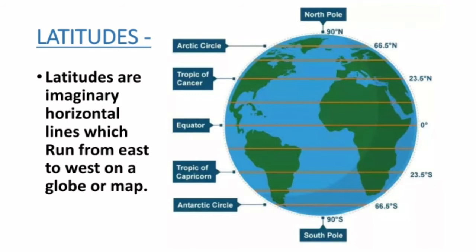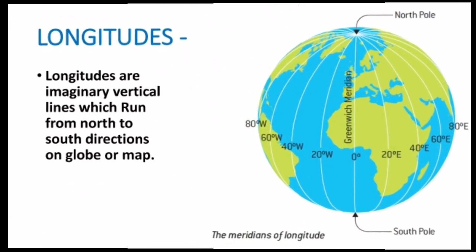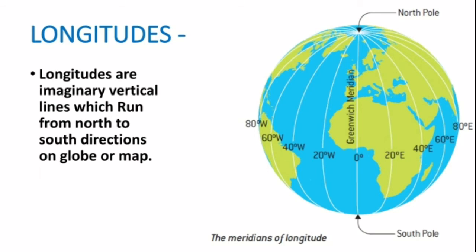The North Pole is at 90 degrees north and the South Pole is at 90 degrees south. In the Northern Hemisphere, the Tropic of Cancer is at 23.5 degrees north, and the Tropic of Capricorn is at 23.5 degrees south. The Arctic Circle is at 66.5 degrees north and the Antarctic Circle is at 66.5 degrees south.